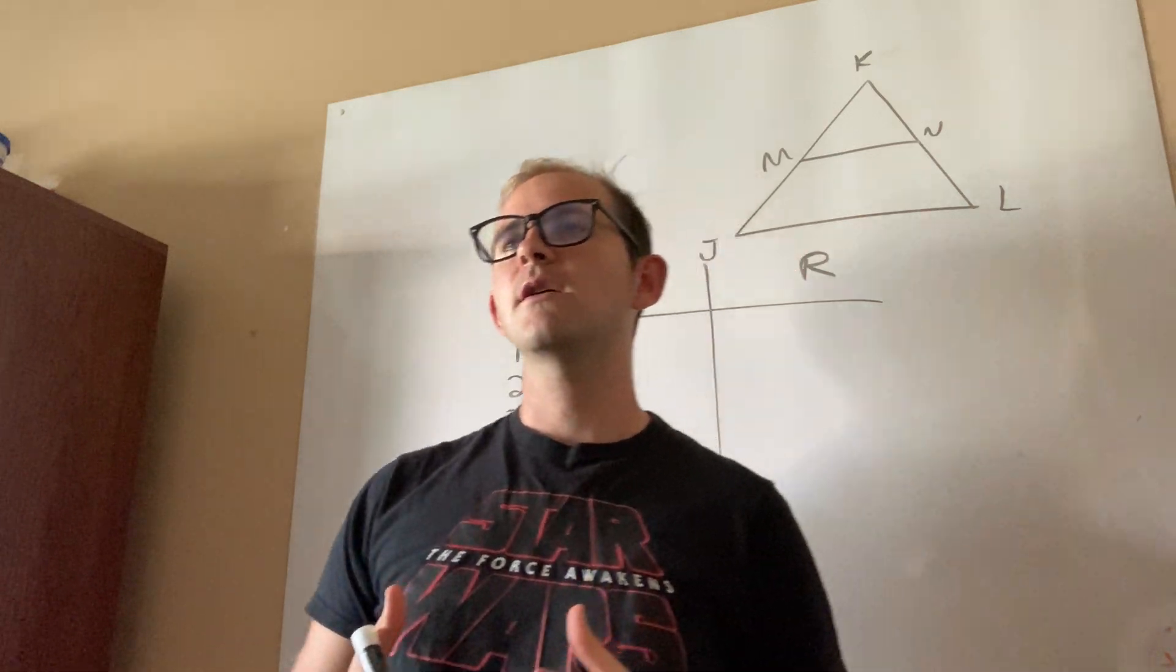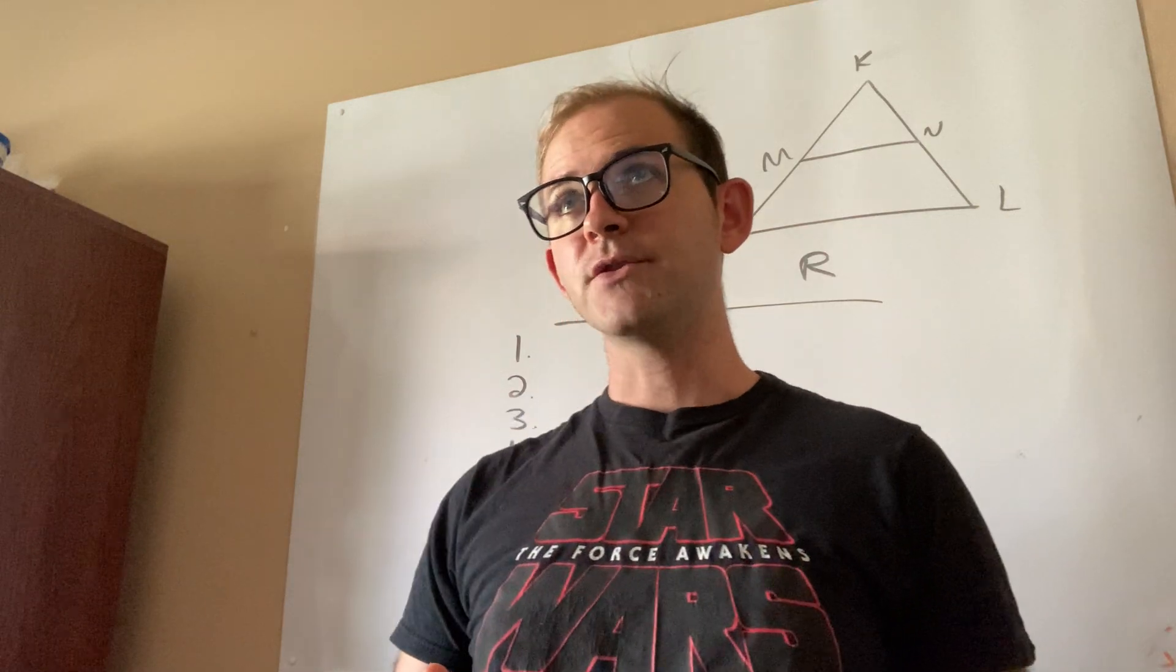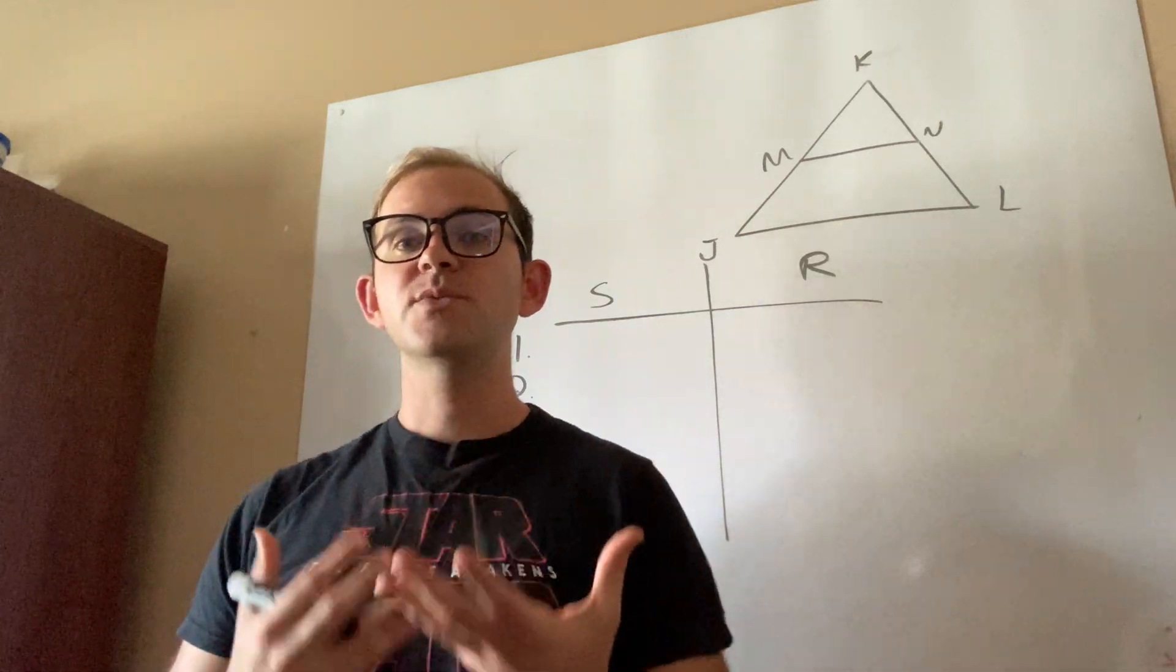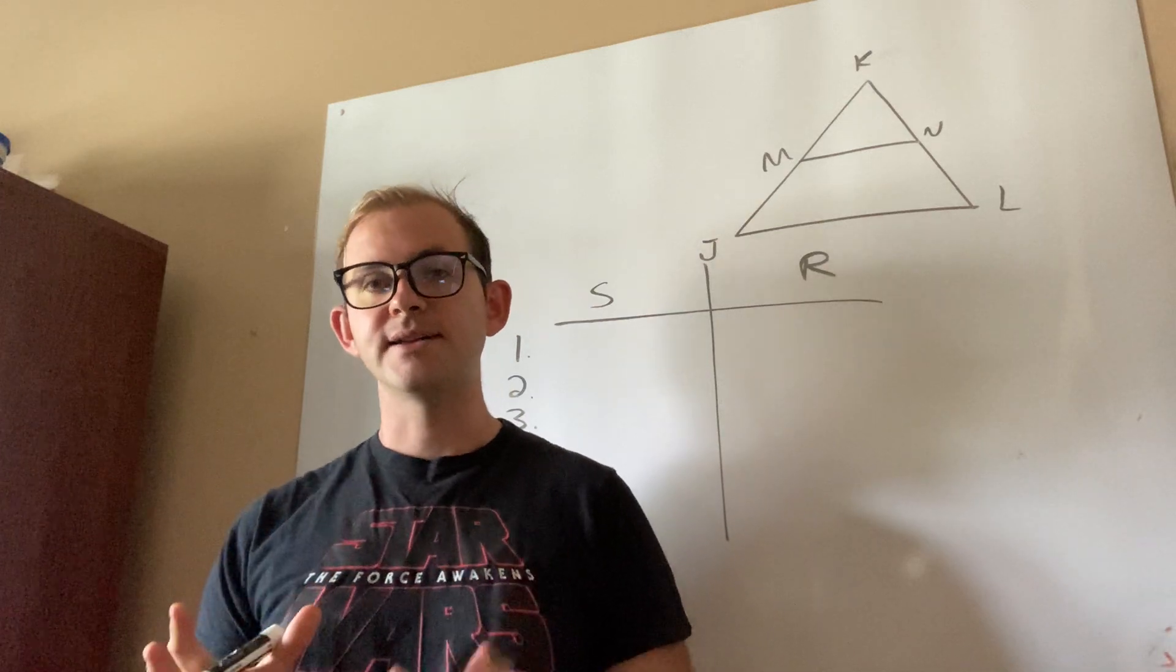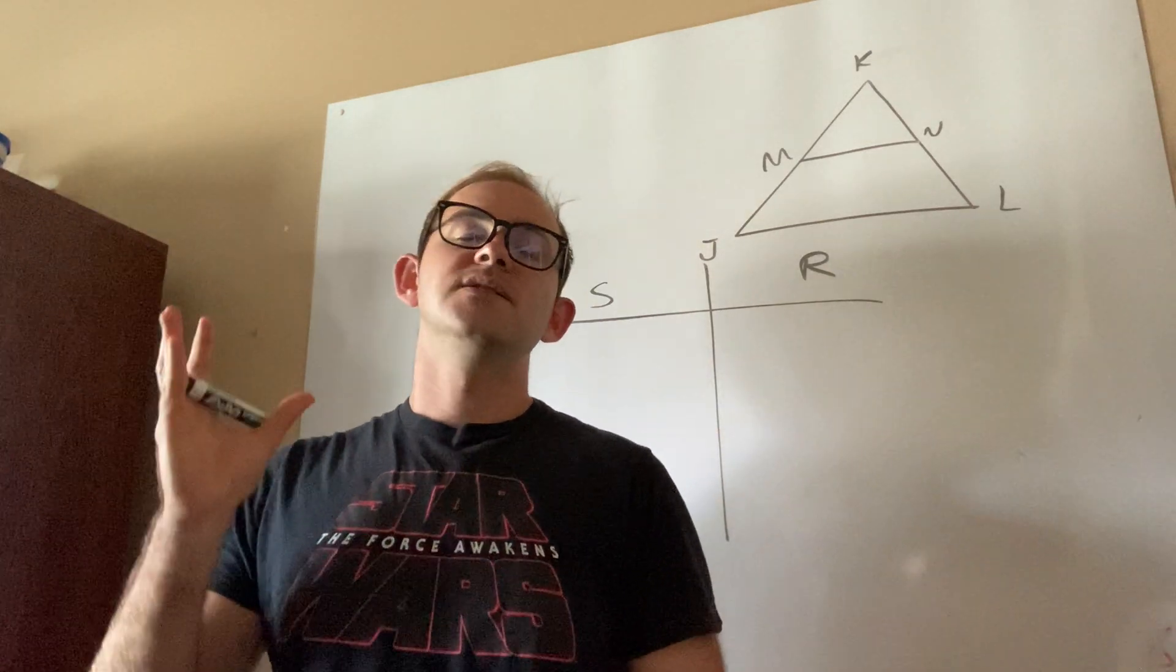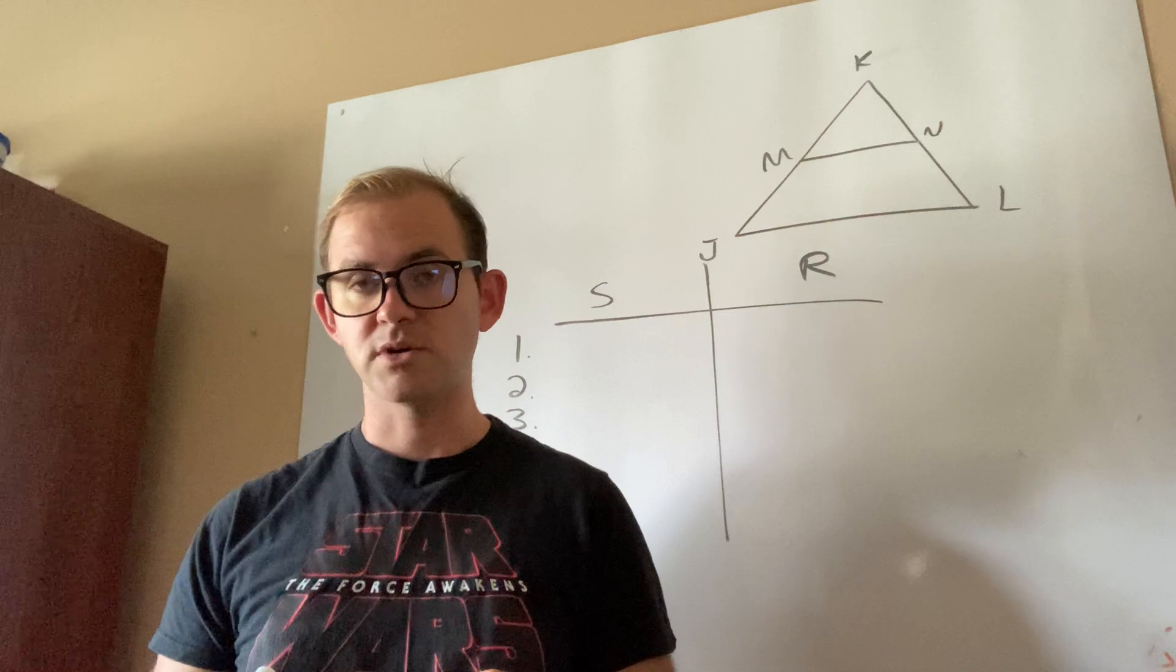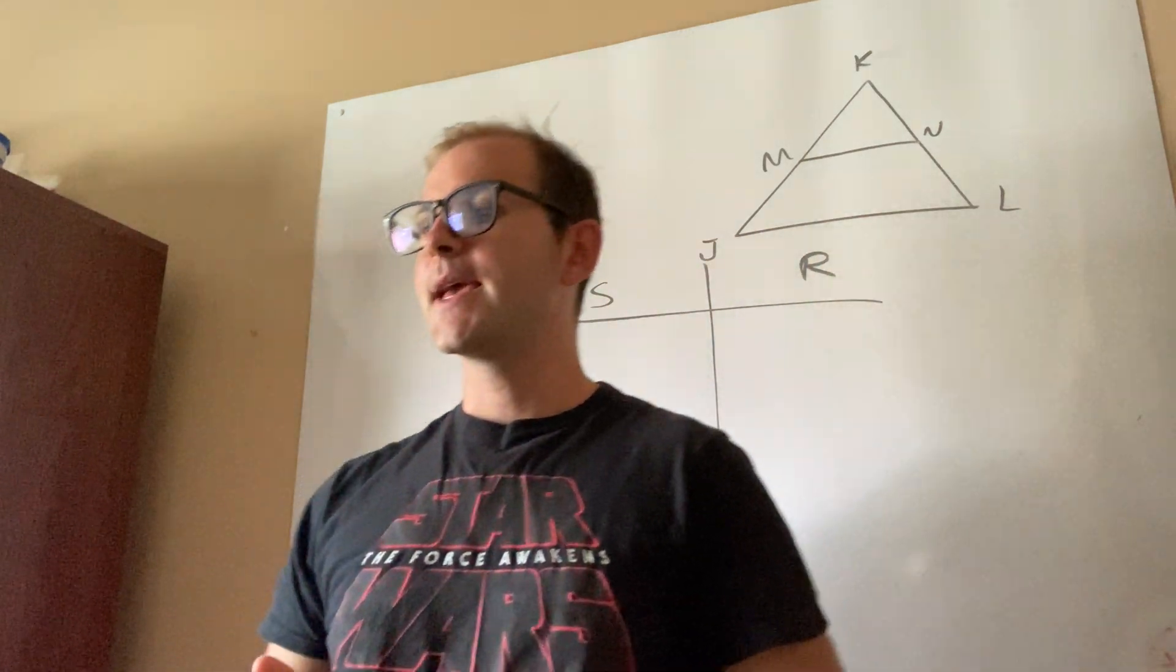So when we're talking about similar figures, we know that corresponding angles are congruent, but corresponding sides are proportional. So as we approach these proofs, I want you to keep those two big ideas in mind. Congruence, both angles and sides are the same. Similarity, angles are the same, but sides are proportional. They're either blown up or shrunken by the same scale factor.